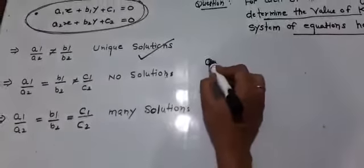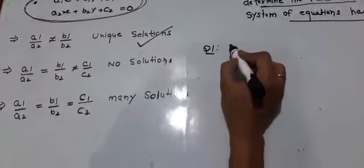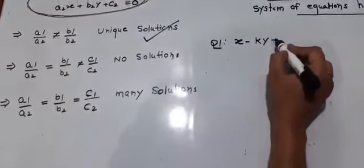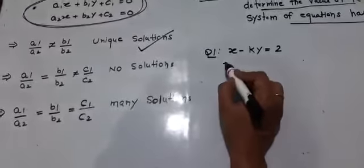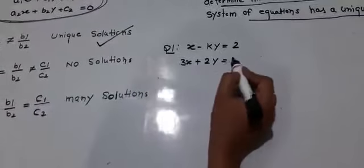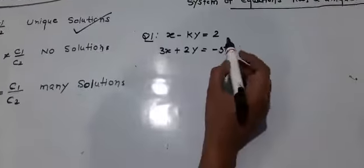Now we start question number one: x minus ky equal 2, 3x plus 2y equal minus 5. So now we start to change this form.